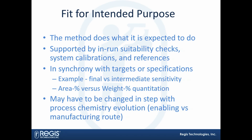Your fit for intended purpose theme should also be in synchrony with targets or specifications. You clearly want to have a method that's sensitive enough for what's important to the process chemistry, the manufacture, and for the regulations. Sometimes the question comes out: do I want my methods to be weight percent with a reference standard involved, or do I just need to be concerned with relative abundance, which some people call area percent? That question is really guided by what your needs are.